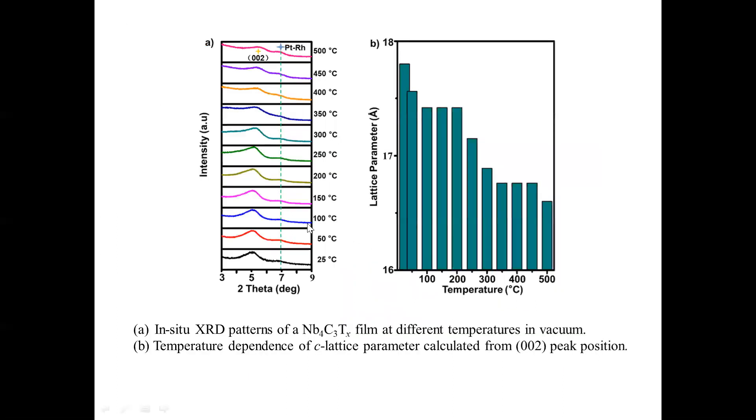To further investigate the thermal transformation of niobium carbide, in-situ XRD technique was used to record the continuous change of interlayer spacing of flexible membranes during the gradual increase of temperature from room temperature to 500 degrees under vacuum conditions. Only the 002 peak shifted during the whole heating process. In addition, no other peaks appeared or disappeared, indicating that no phase transition had taken place.